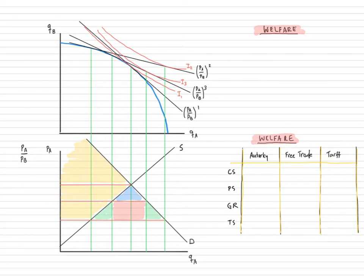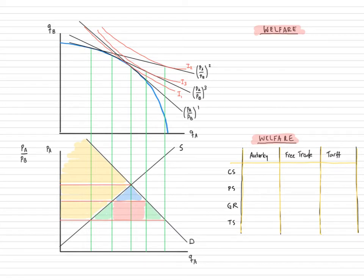So here we have two diagrams, and they are very complicated. In the top diagram — this is our general equilibrium analysis — we have the quantity in the B industry and quantity in the A industry on the axes, and this blue curve here is the production possibilities frontier. These black straight lines are three different relative prices: relative price of A1, relative price of A2, and relative price of A3. And then the red curves here are the indifference curves, representing utilities of 1, 2, and 3.